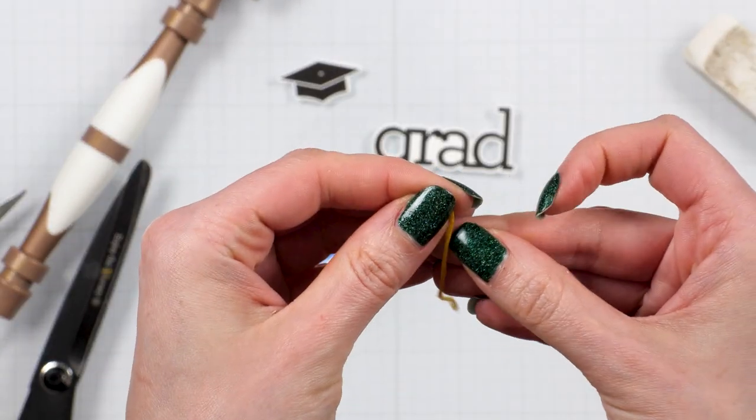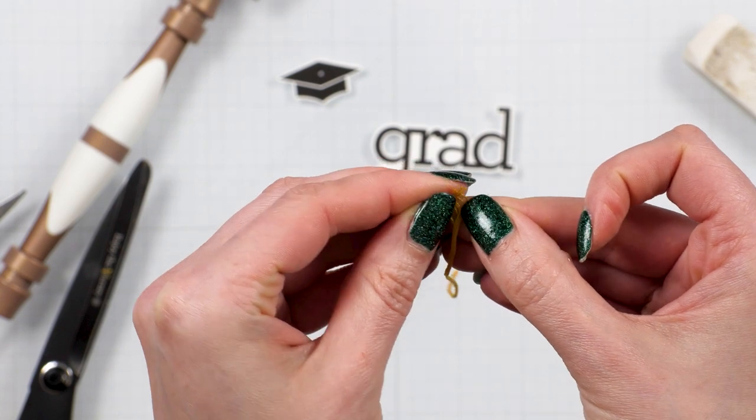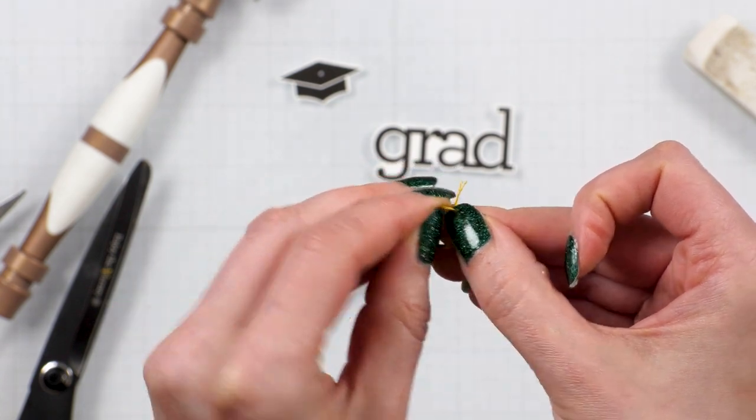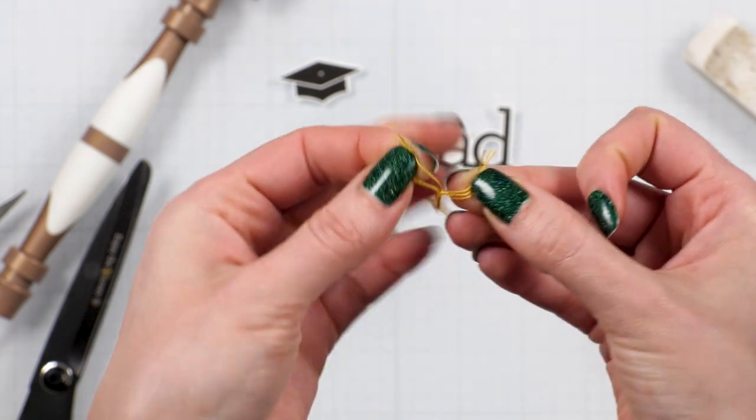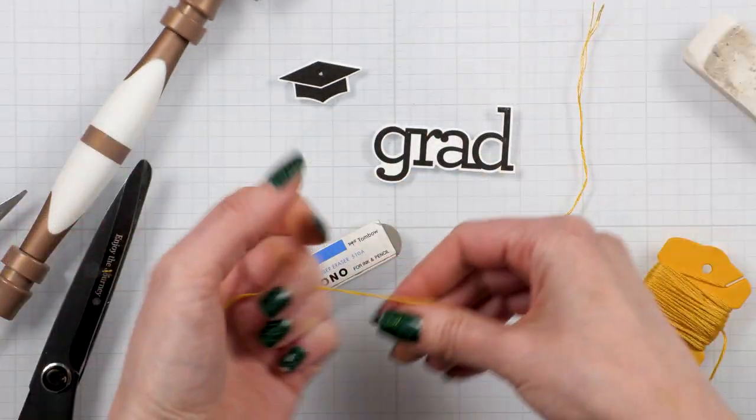I first cut a piece of thread about four inches long. I separated the strands. I need three strands and this gives me two pieces of thread. And I'll use both pieces.